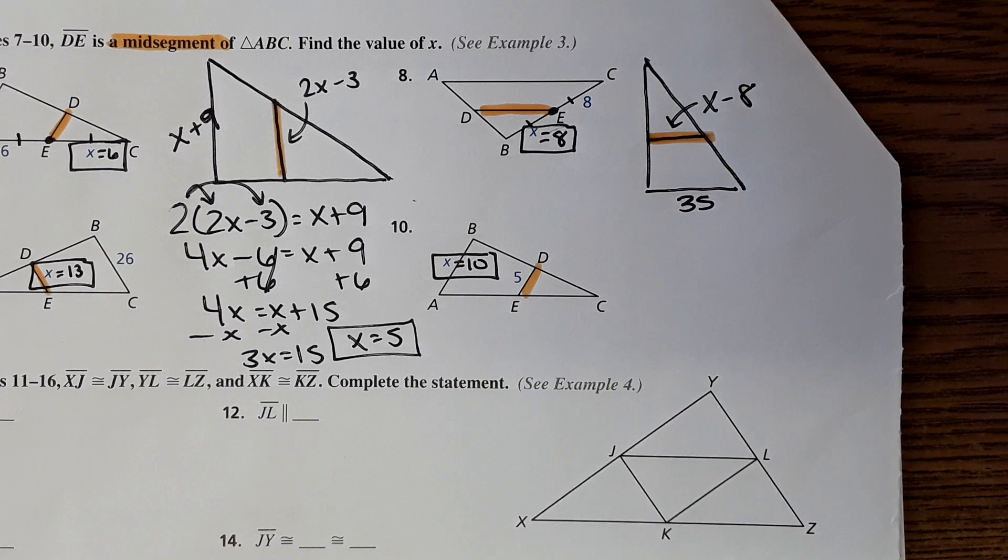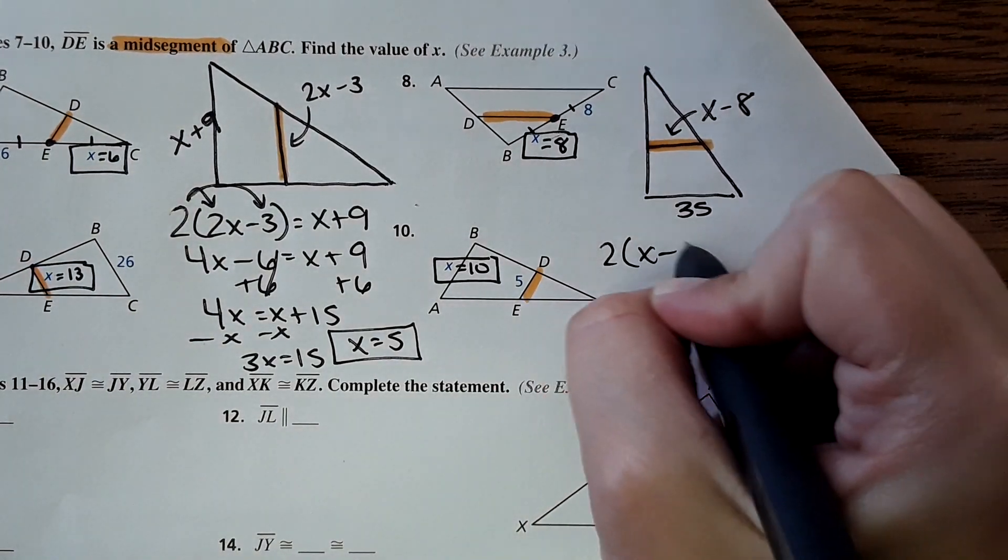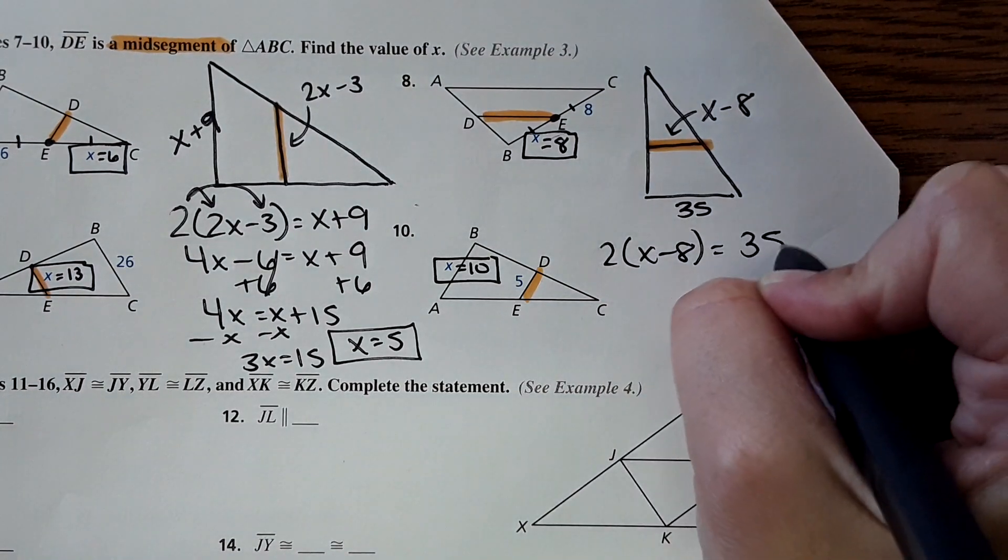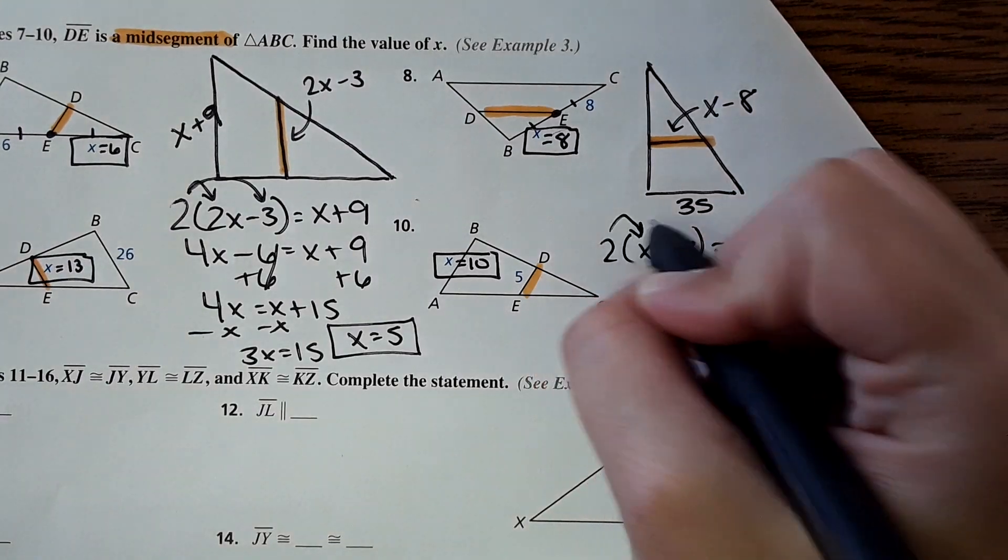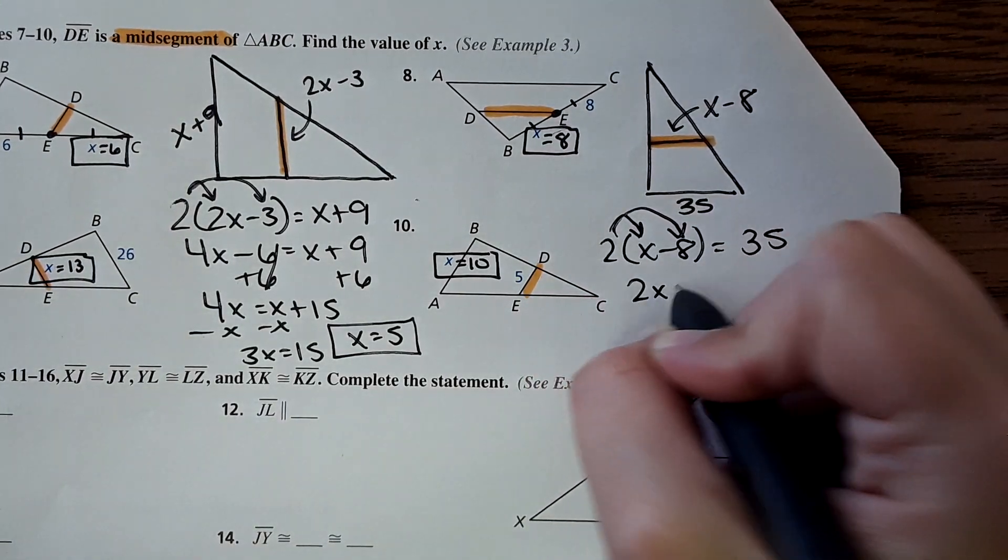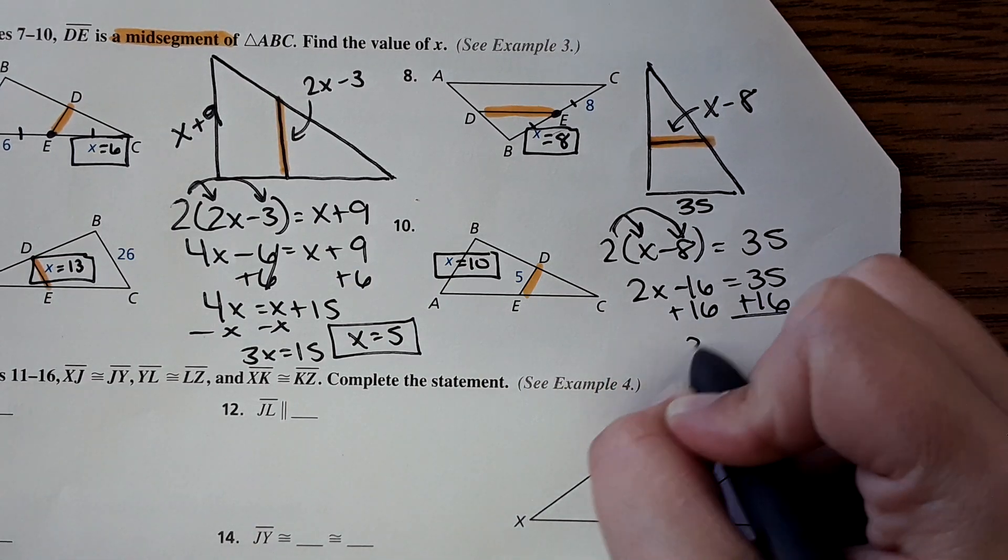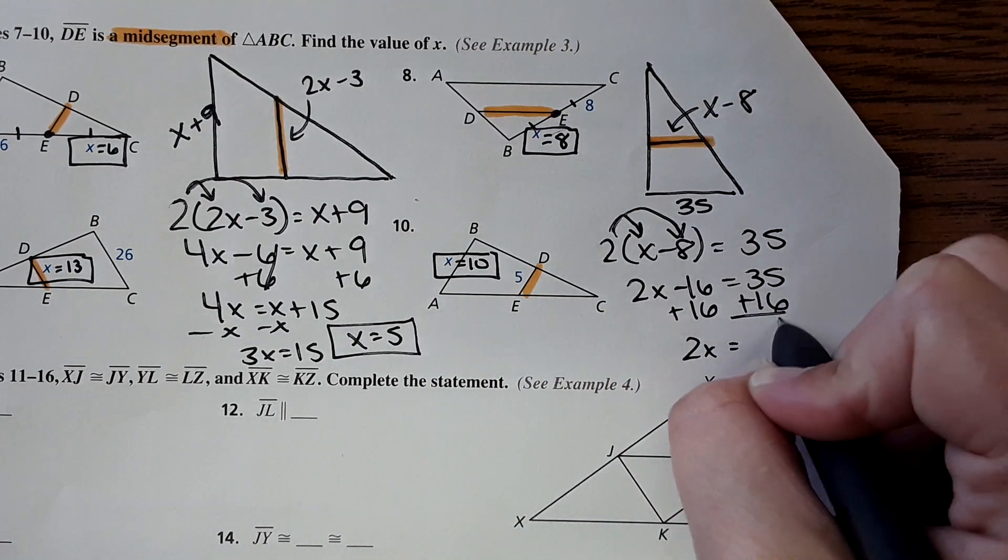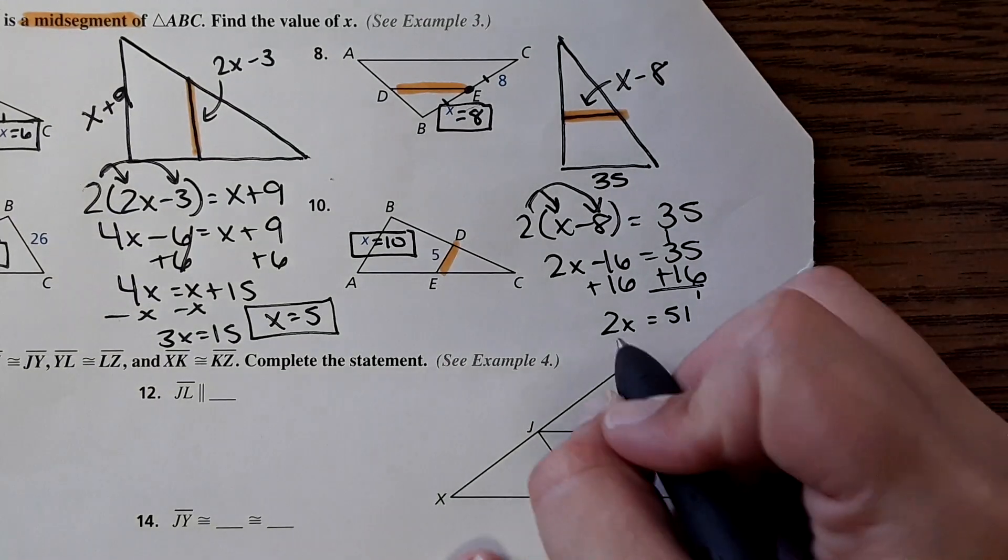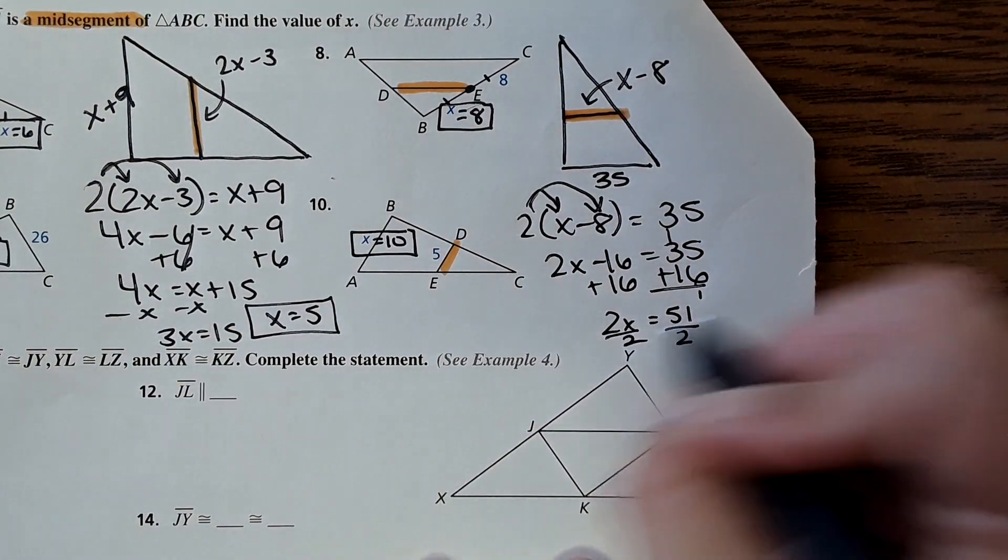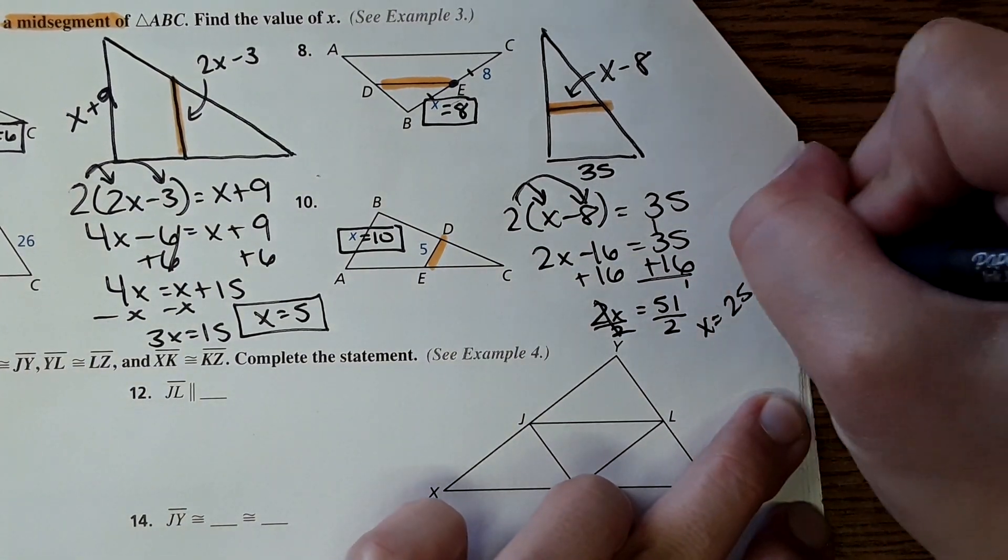Okay, so how I'd set it up is two of these should equal that length there, so two times x minus eight equals 35, and then just solve for x. Two x equals 51. I might get a decimal here, so x equals 25.5.